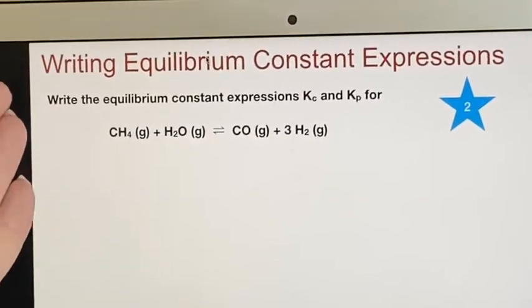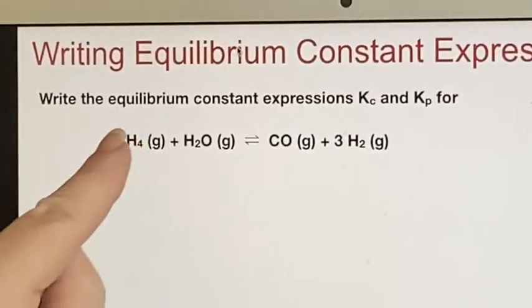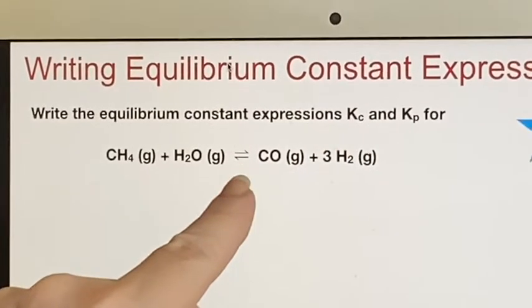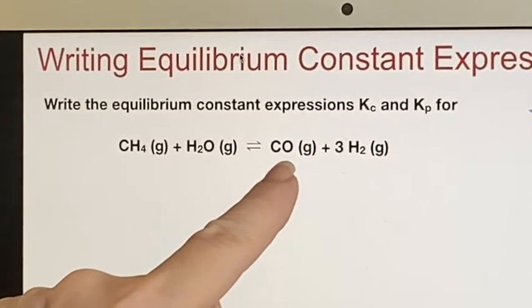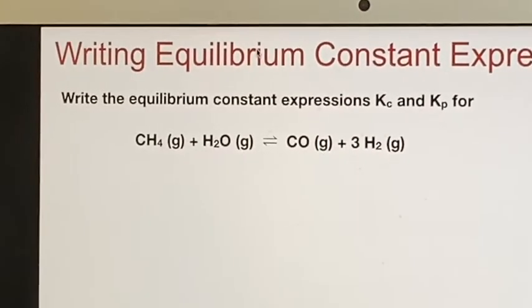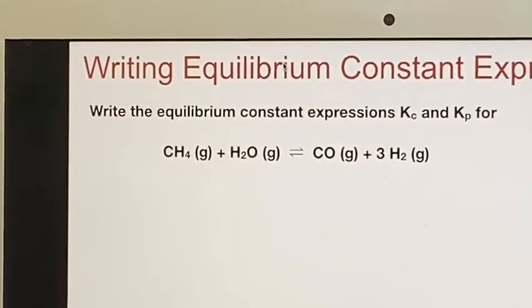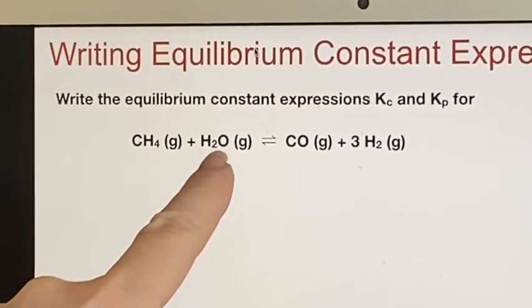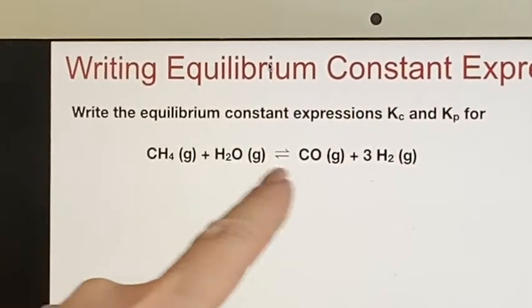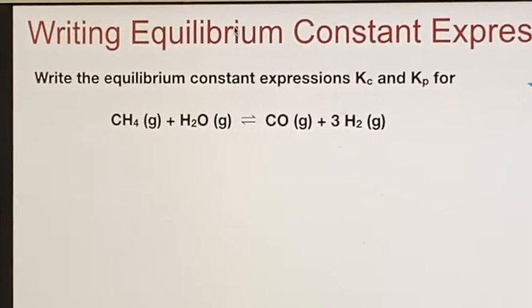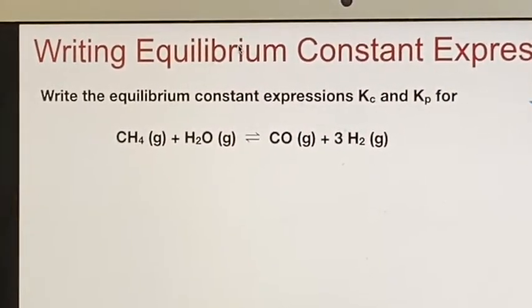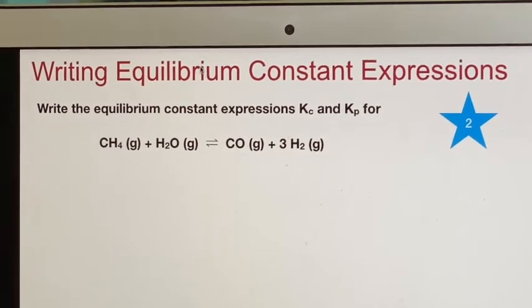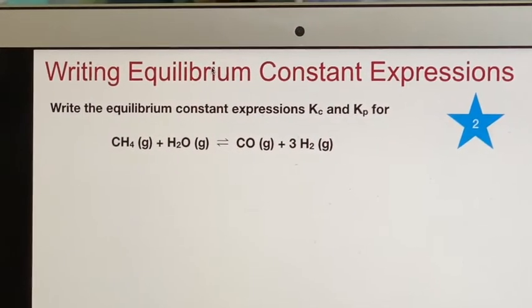Now they're asking us a question. I see that we have methane and water. They're both gases. They're in equilibrium, making carbon monoxide and hydrogen gas. We need to check and make sure it's balanced. One carbon. Yes. Four, five, six hydrogens. Six hydrogens. One oxygen. It's balanced. But you should always double check because sometimes you will be given something that isn't balanced and you'll be asked to do that as part of it.